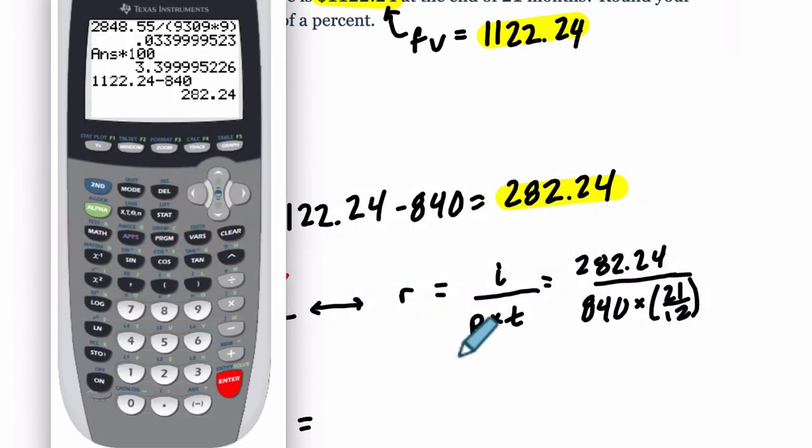So let's use the calculator. We have 282.24 already entered. So we're going to divide 282.24 by 840 times 21 over 12. So you want to do that product first. So enclose it in your parentheses. 840 times, and you can just do another set of parentheses, 21 over 12. You don't need that second set of parentheses. It'll still give you the same answer. But it helps me organize when I look at my work to check it. Oh yeah, this is a fraction 21 over 12. Hit enter.